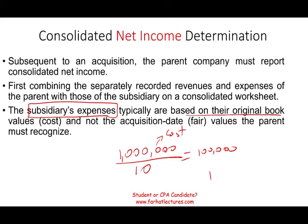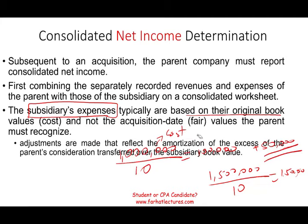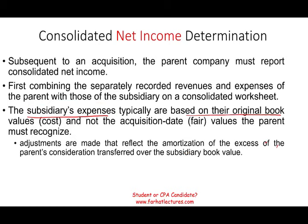For example, the subsidiary's expenses may be based on the original book value. If they purchased a building for $1 million and are amortizing it over 10 years, their depreciation is $100,000 per year. But when we purchased that same building for $1.5 million with 10 years remaining, we are depreciating $150,000 — an excess of $50,000. This is called excess amortization, and we have to include this adjustment to reflect the amortization of the excess of the parent's consideration over the subsidiary's book value.